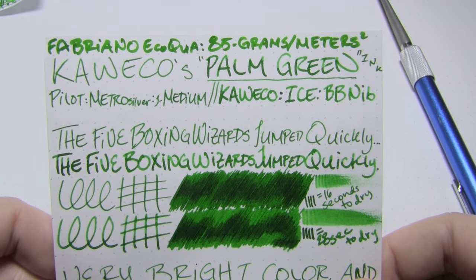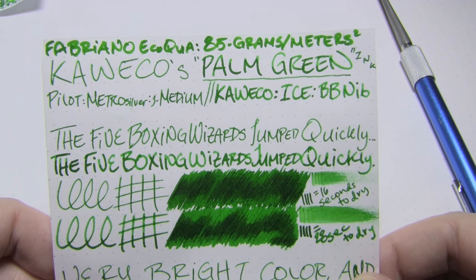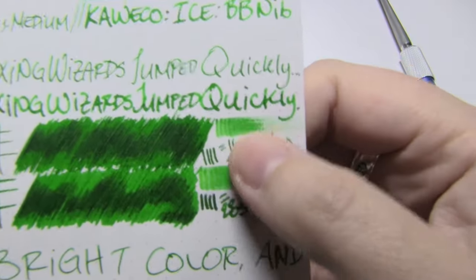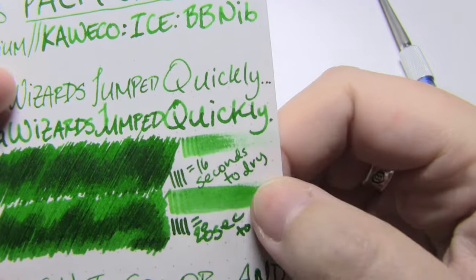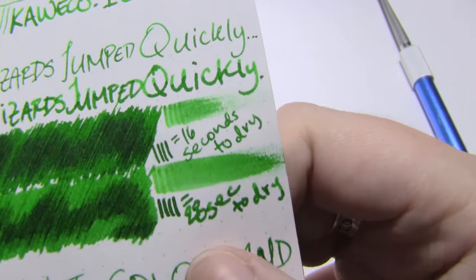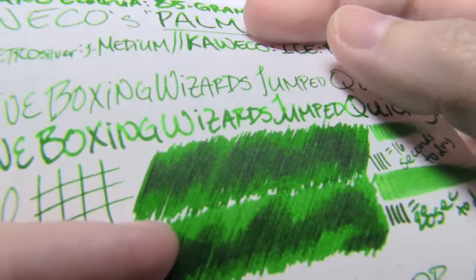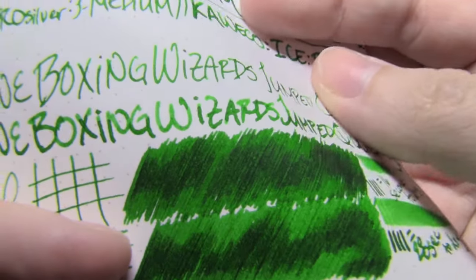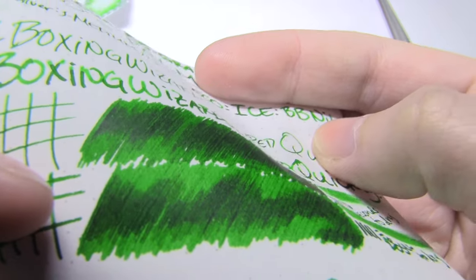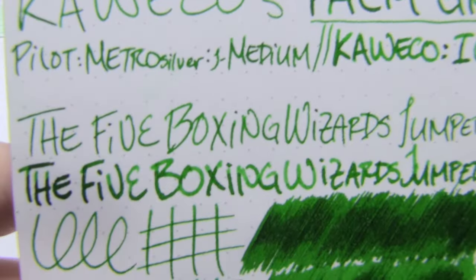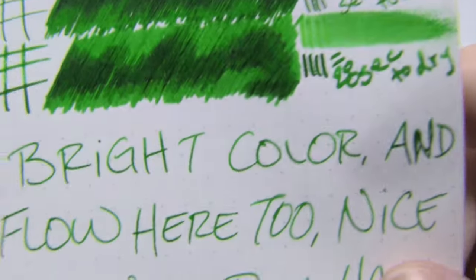Now here's Fabriano EcoQua. It's an 85 gram per square meter paper. It's my favorite. Here, again, very bright, bold color. Good saturation. It's a well saturated ink. It doesn't look thin. Japanese medium took 16 seconds to dry. That double broad took 28. And you can see the amount of ink in the smear. This has dense color to it. Again, we have these tiny hints of red sheen. There's lovely shading. Again, we have the halo effect around the wettest parts. No bleed feather spread or echo.